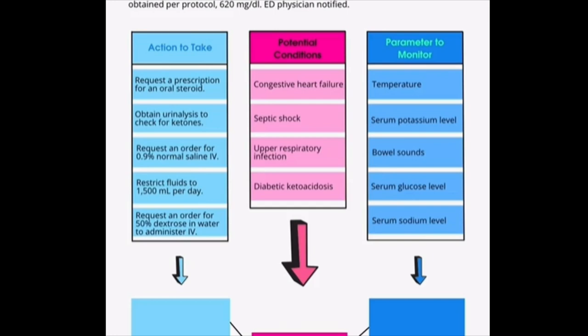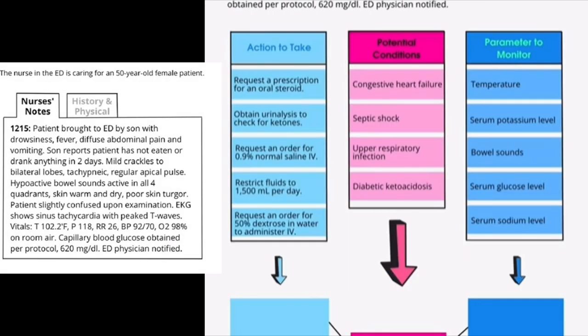The first potential condition is congestive heart failure. The patient does have mild crackles, which could be from fluid in the lungs, so CHF is a possibility. Next, we have septic shock. The patient is febrile with a temp of 102.2, tachycardic, and hypotensive, so septic shock could also be a possibility.